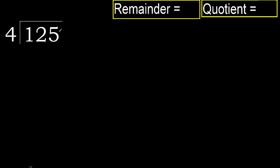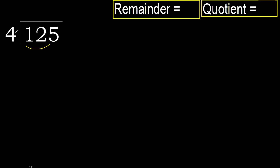125 divided by 4. 1 is less, therefore next. 12 is not less, therefore we work with 12. We find which number, when multiplied by 4, is nearest to 12 but not greater.